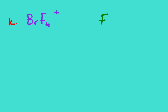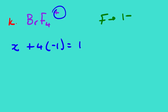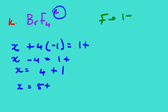Example 11: BrF₄⁺. Fluorine always has an oxidation number of 1− in all compounds. Setting up: x + 4(−1) = 1+ → x − 4 = 1 → x = 5+. The oxidation number of bromine (Br) in BrF₄⁺ is 5+.